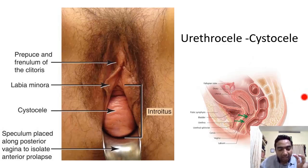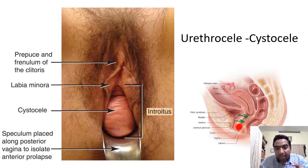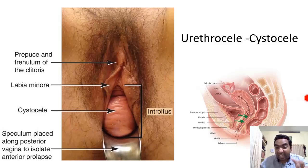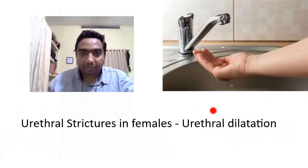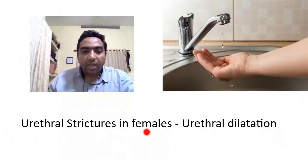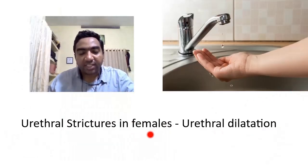A cystocele and a urethrocele can occur together. In your gynecology posting, when you see a uterine prolapse, check whether there is a cystocele or a urethrocele. If the rectum is prolapsing through the posterior vaginal wall, it is called a rectocele.